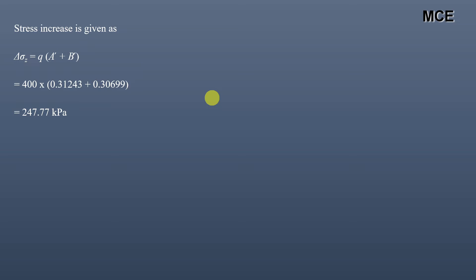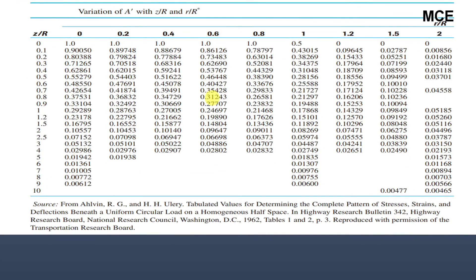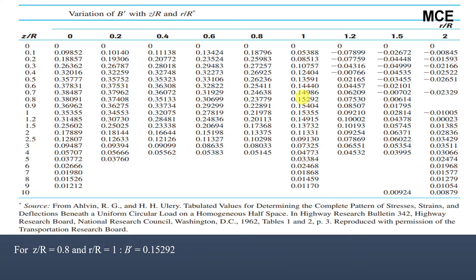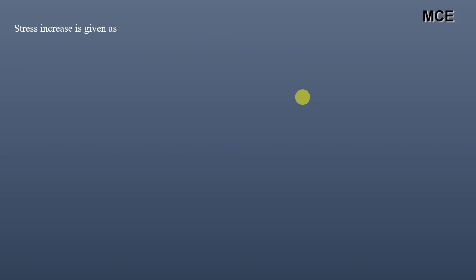For a radial distance of 5 meters, r/R equals 1.0, giving A prime equals 0.21297 and B prime equals 0.15292. The stress increase is Q multiplied by (A prime plus B prime), which equals 400 multiplied by (0.21297 plus 0.15292), equaling 146.36 kilopascal — less than the earlier value at a radial distance of 3 meters.